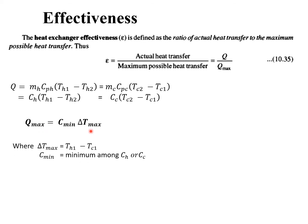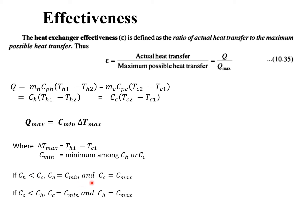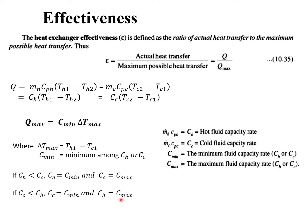The maximum possible temperature difference in a heat exchanger is always T_h1 minus T_c1. If it is a hot fluid, its outlet temperature should equal the inlet temperature of the cold fluid, and vice versa. To find C_min, calculate C_h and C_c; the smaller value is C_min and the larger is C_max. If C_h < C_c, then C_h = C_min; if C_c < C_h, then C_c = C_min.